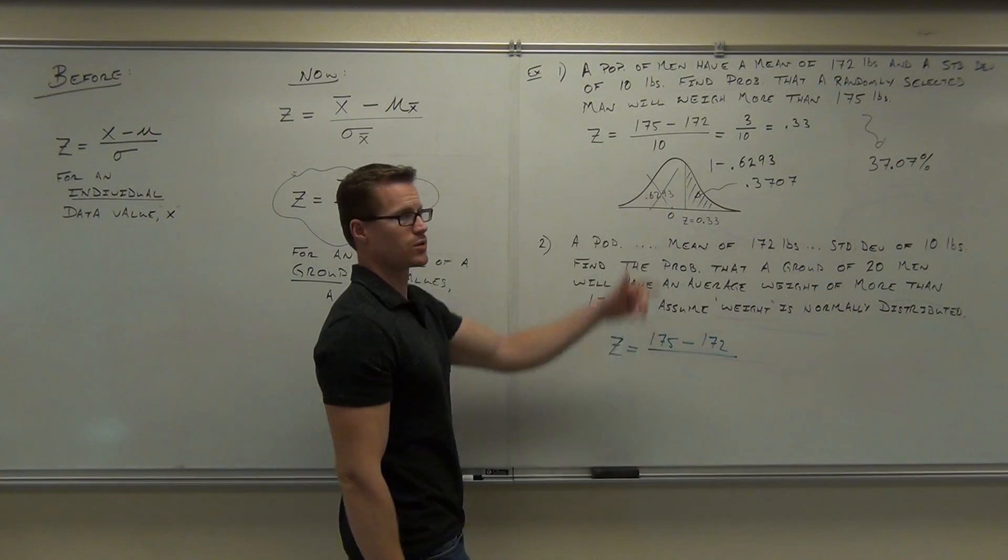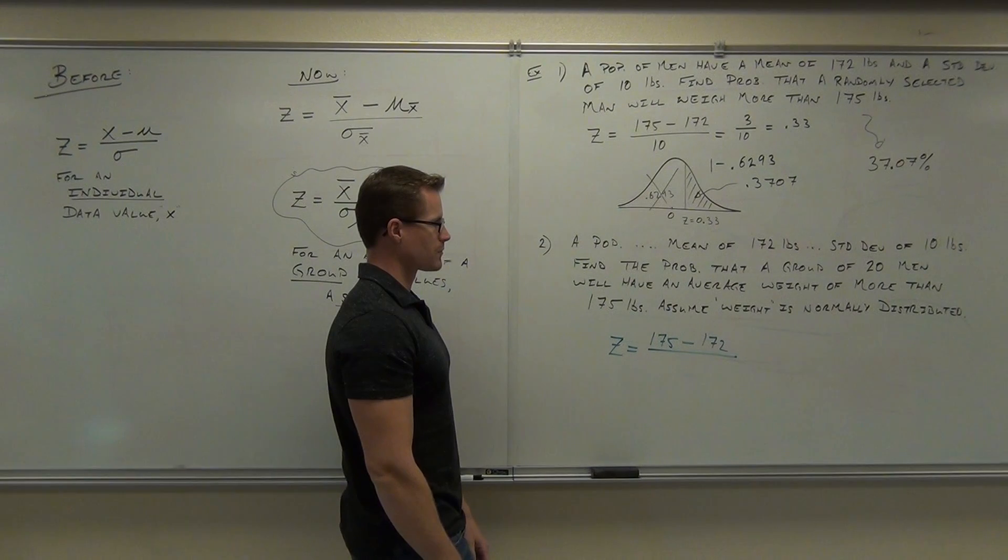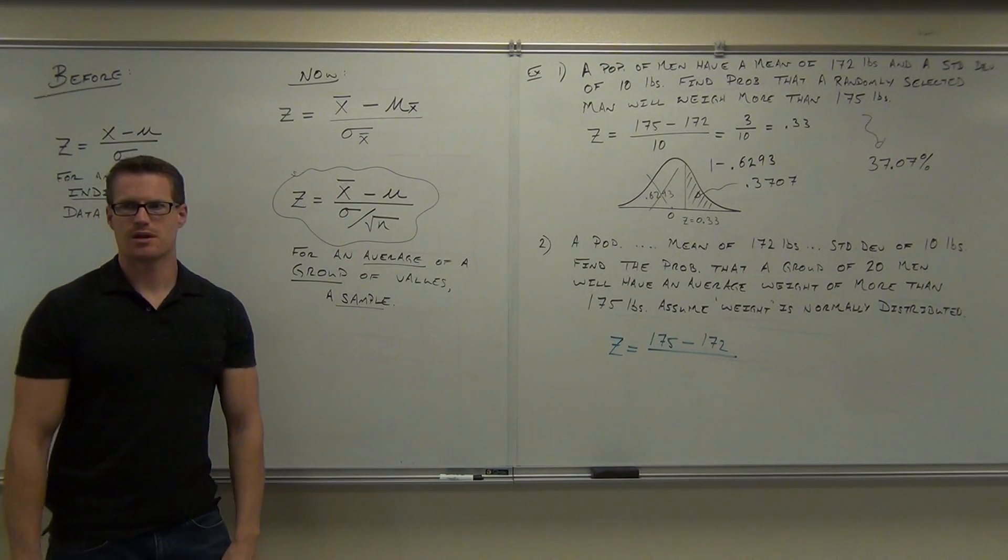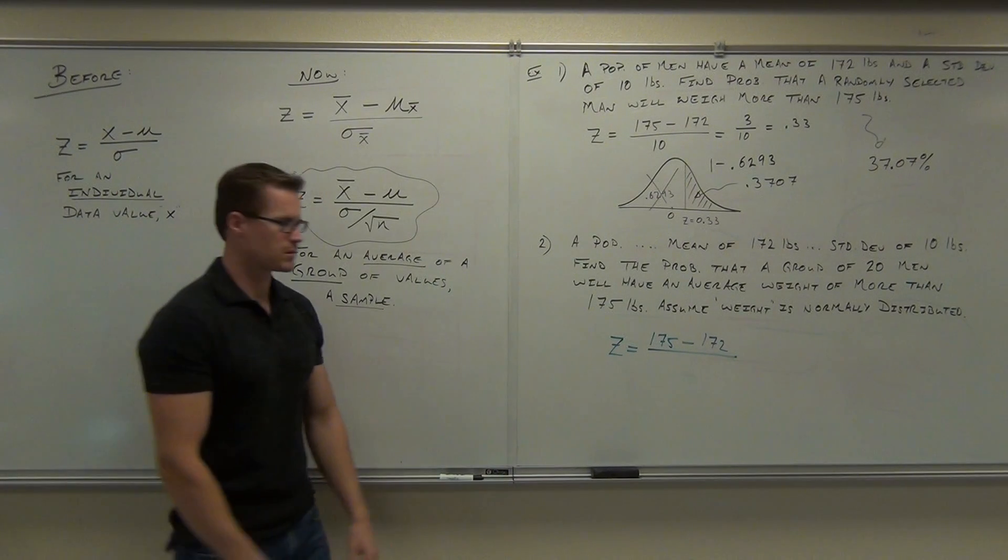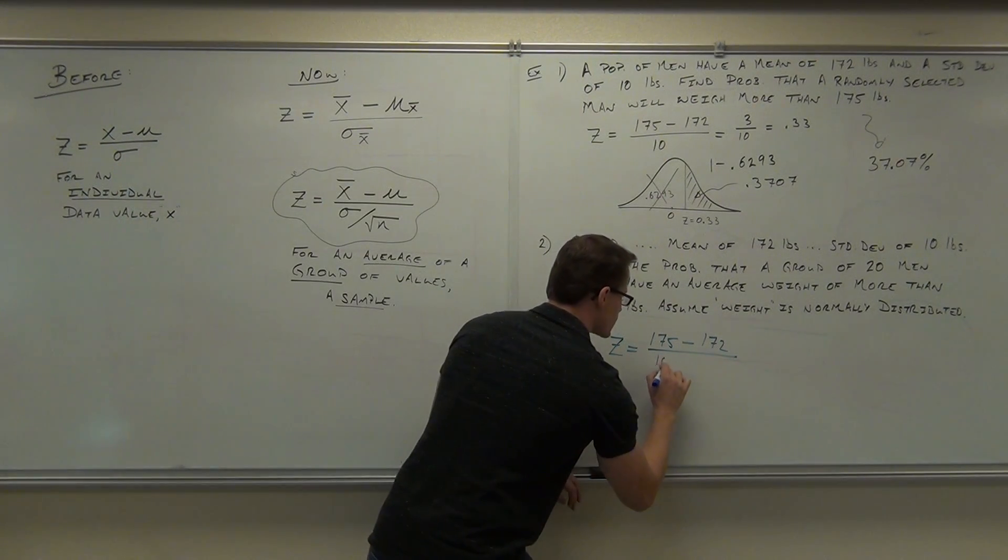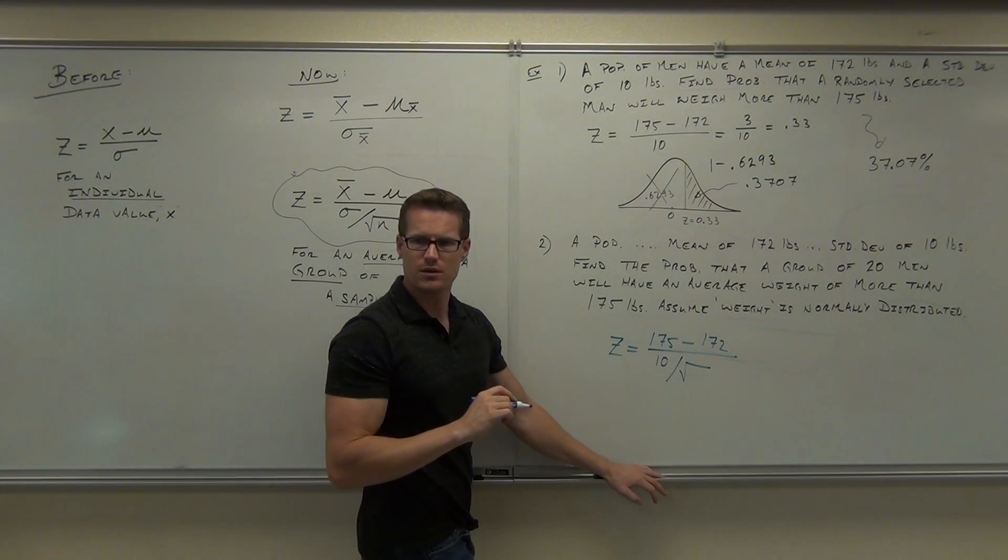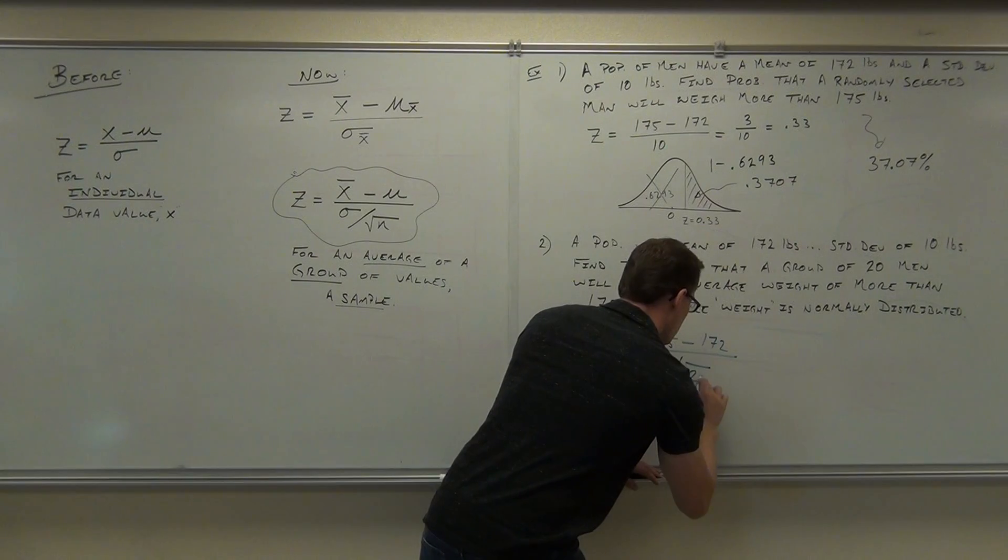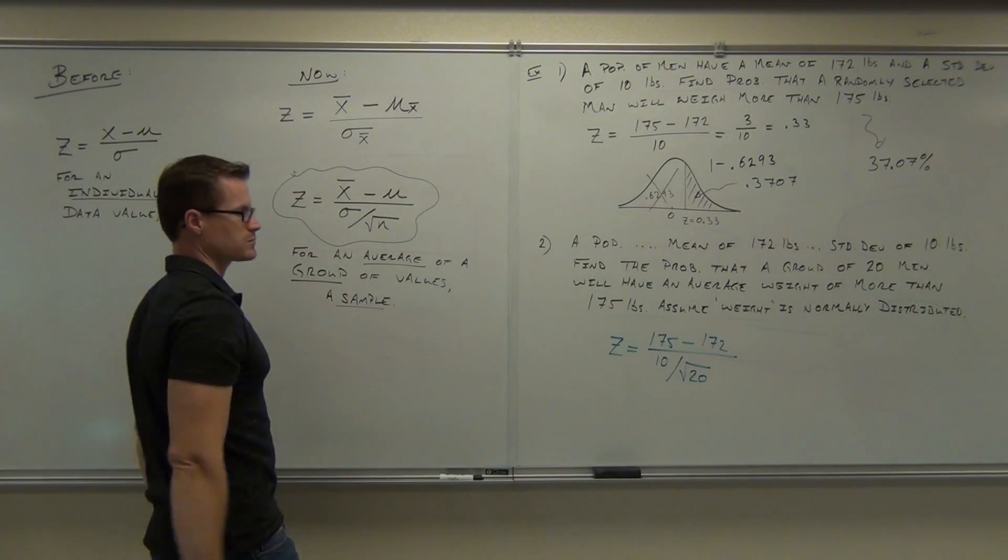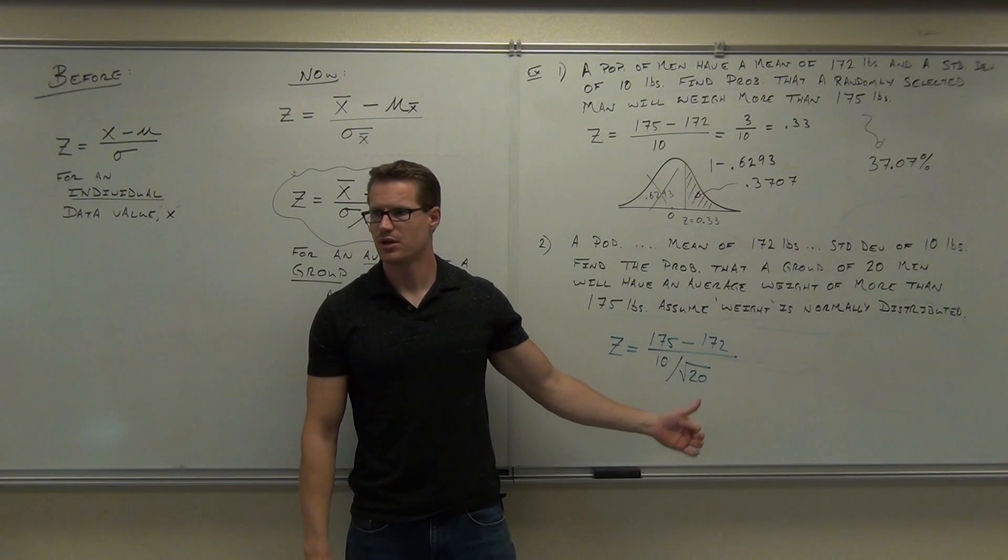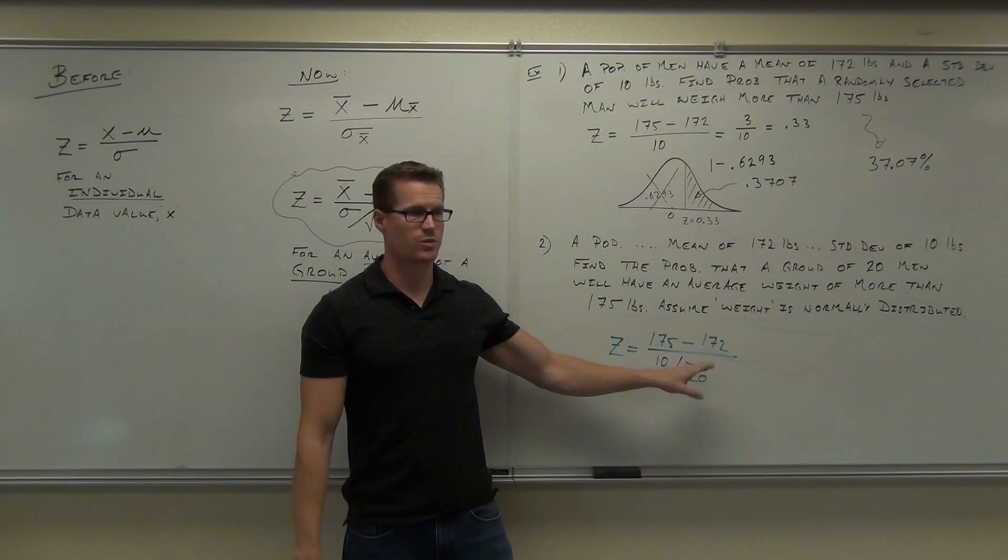So far, it looks identical. On the bottom, are we going to divide by 10, or are we going to divide by something other than 10? I know that the standard deviation is 10, but I need to divide that number by the square root. The square root of what? 20. That's our sample size, 20. We're using this formula right here. You've got to do the square root before you do the division.